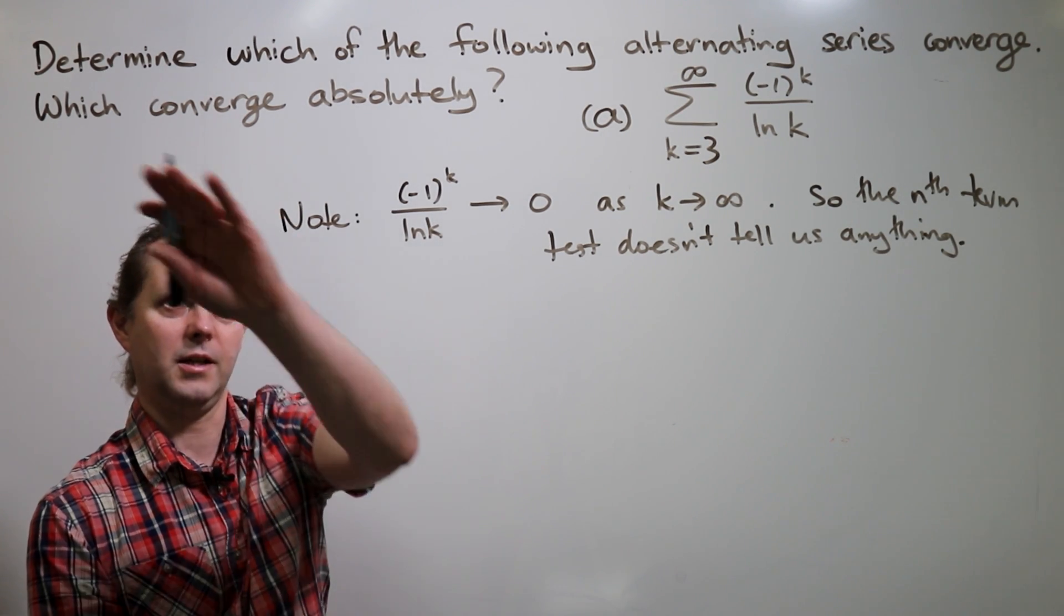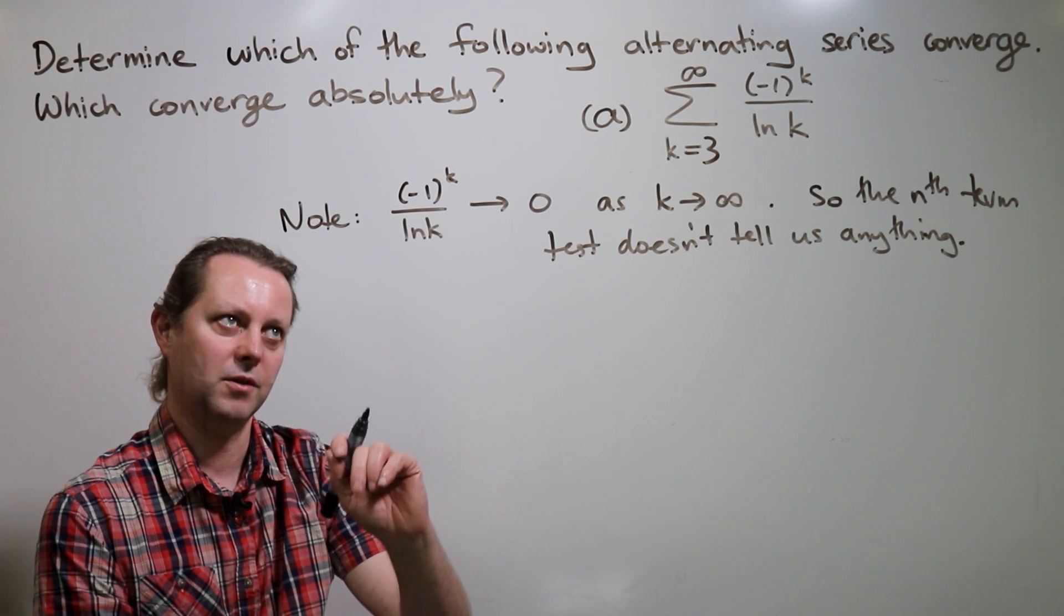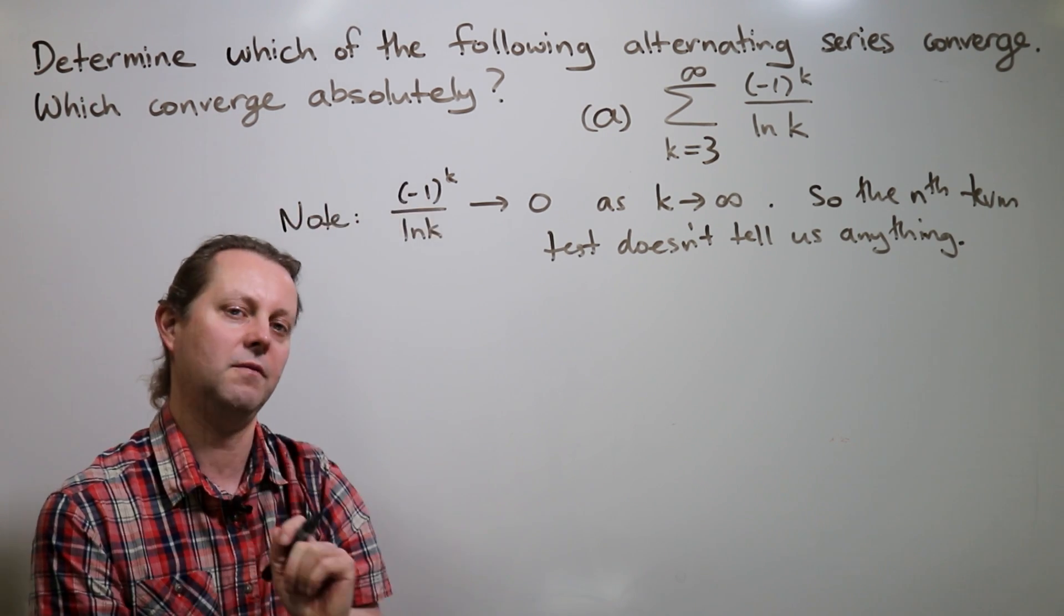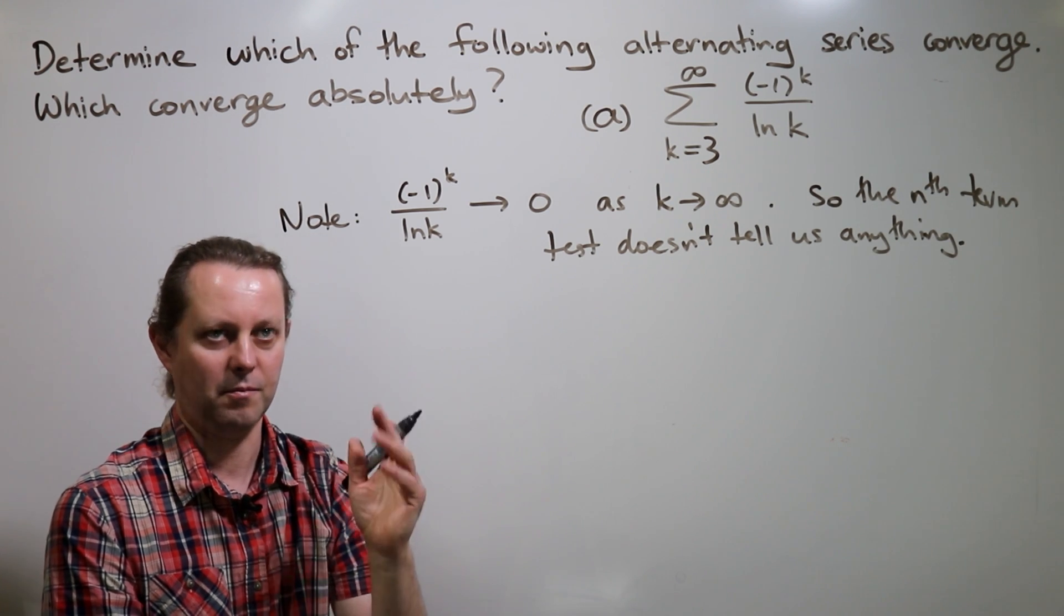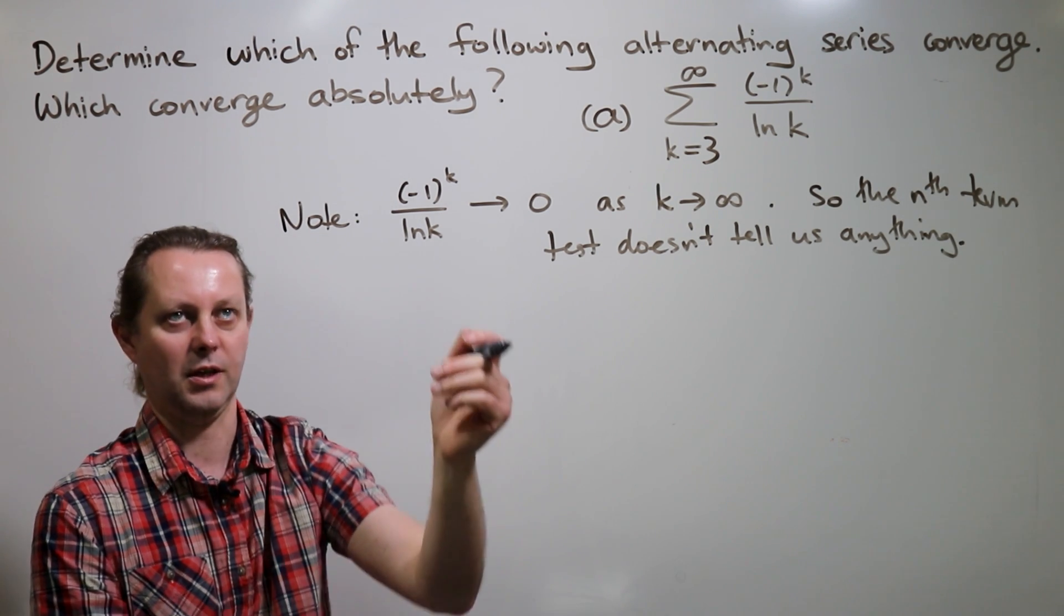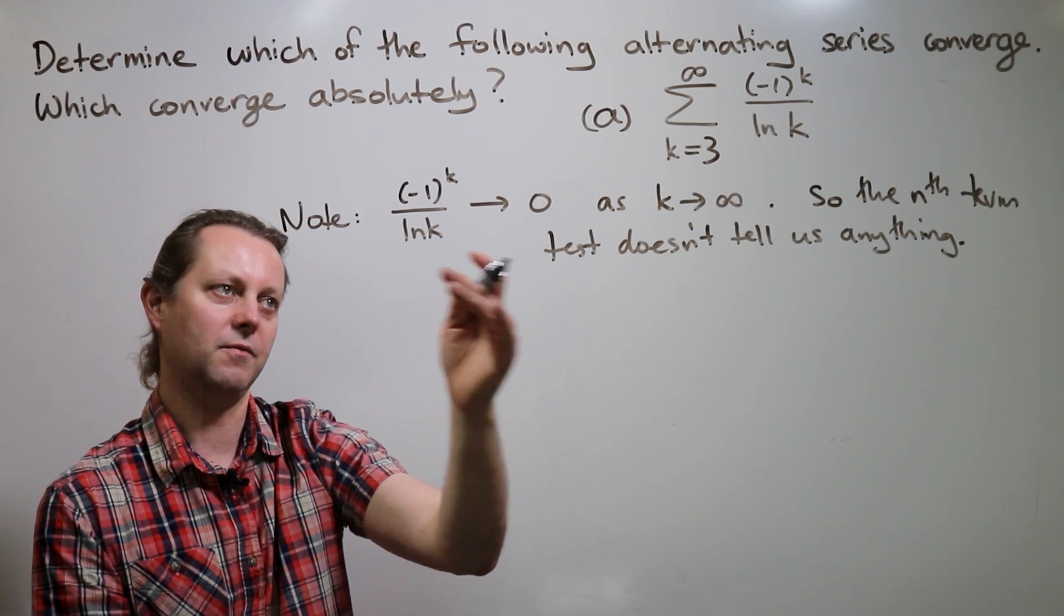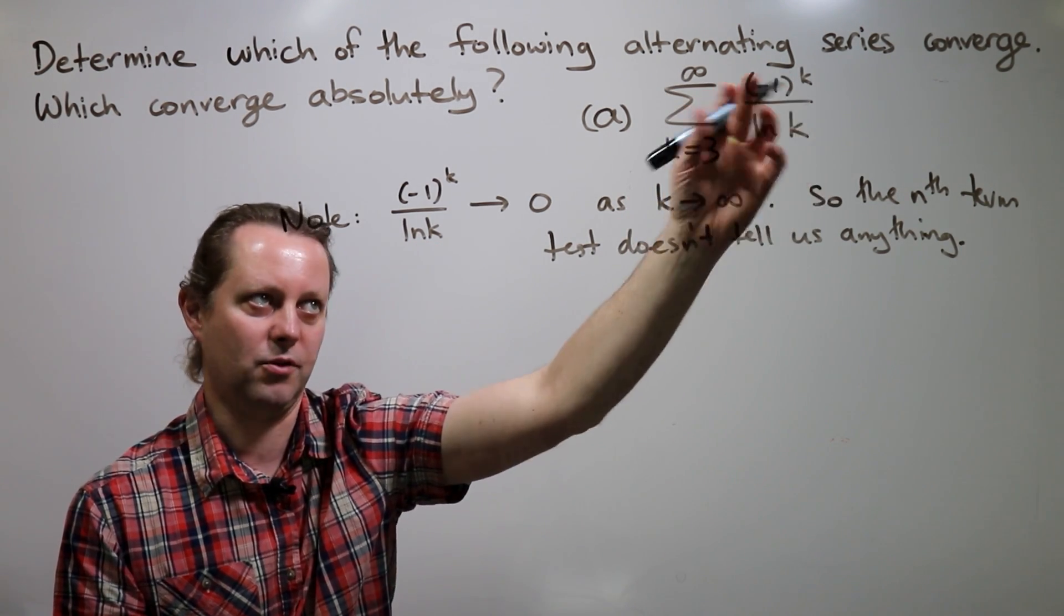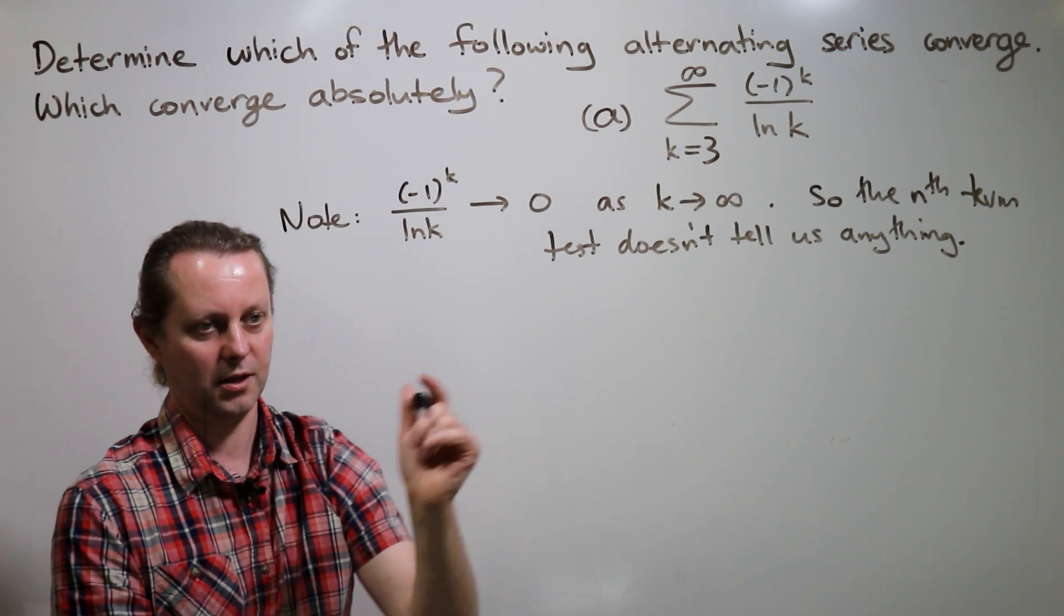Okay, so we're going to check the absolute convergence first because that may save us time. If the series turns out to be absolutely convergent, then it's convergent. Okay, so we'll do that first. And absolutely convergent means that the sum with these absolute value of these terms converges. So let's check that.